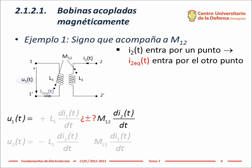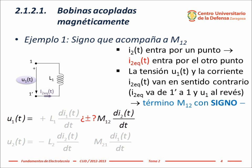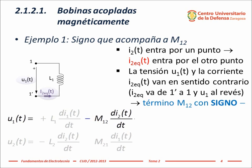The equivalent current flowing through coil 1 creates the same effect as the current I₂ flowing through coil 2. The equivalent current enters the terminal marked with the point in coil 1, in the same way I₂ did. As the voltage reference in coil 1 and the equivalent current are opposite — the equivalent current goes from terminal 1' to 1, while the reference voltage goes from 1 to 1' — the sign of the term containing M sub 1 2 is negative.